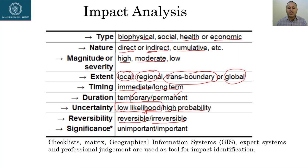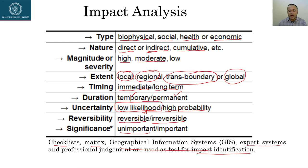Significance is assessed — are the identified events important or less important? Checklists, matrices, geographical information systems, expert systems, and professional judgment are used as tools for impact identification.